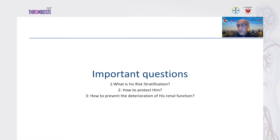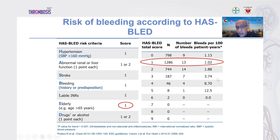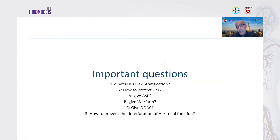The first step is risk stratification. You must calculate the CHA2DS2-VASc score — in this patient it is four or more, and the higher the score the higher the risk of stroke. You also need to assess the HAS-BLED score for bleeding risk; this patient scores almost three, indicating high risk of both stroke and bleeding. You must protect the patient primarily from stroke development.